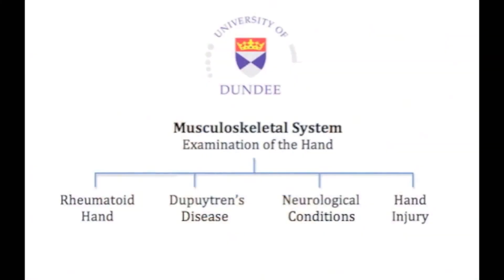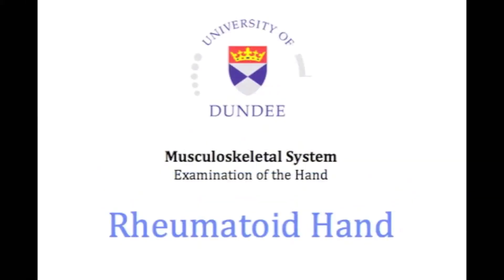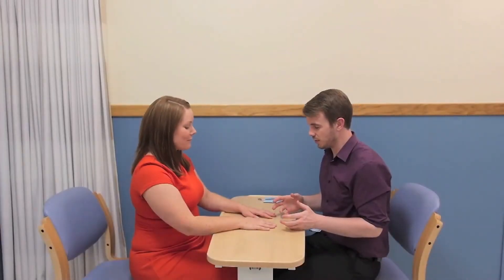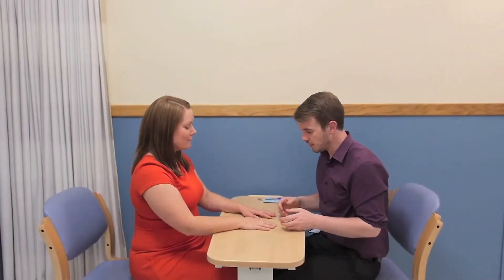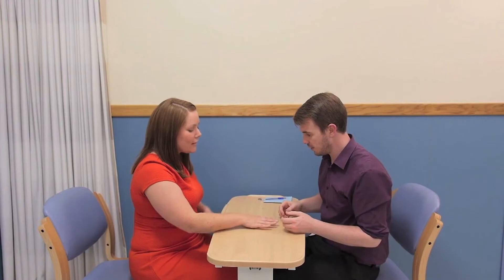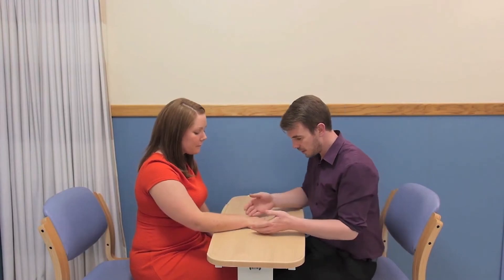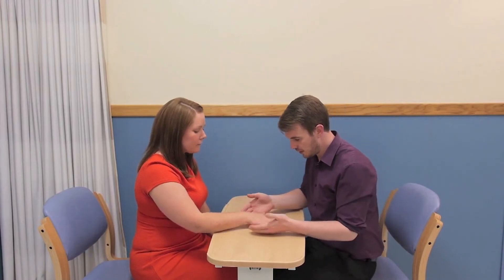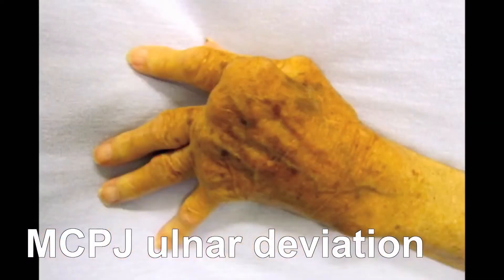The examination is now continued along the line most suited to the patient history and universal screening. Focus the rest of the exam on the relevant pathology. Examination of the rheumatoid hand begins with inspection for specific hallmarks of rheumatoid disease, including ulnar deviation at the metacarpophalangeal joints.